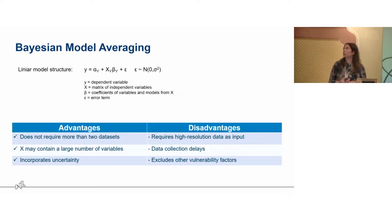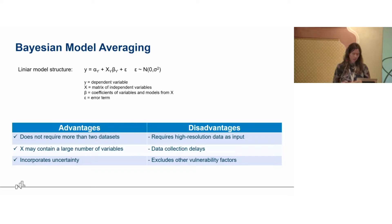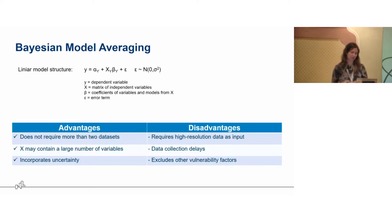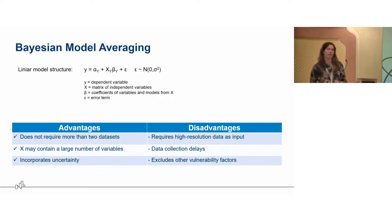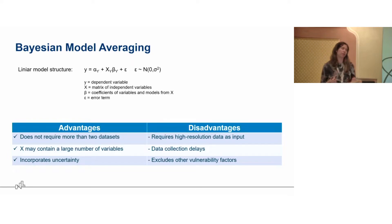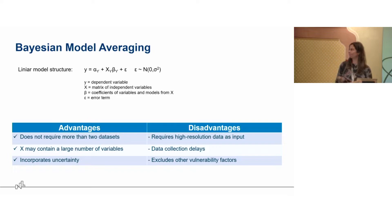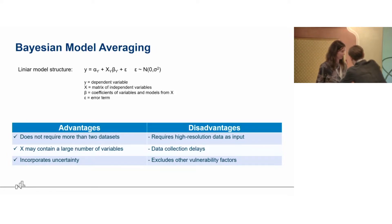There are also some disadvantages, especially because of the high resolution data input requirements. Collecting this data might involve delays in reproduction of such a study. It also restricts the analysis to demographic variables, whereas we know from vulnerability literature that there are many other factors — such as the urban fabric and share of green and blue spaces within the city — that also contribute a lot to how vulnerable people are. Thank you very much; I will give the word to Andrea, and then we can take questions at the end.